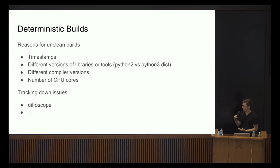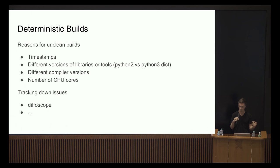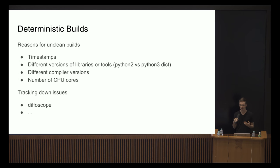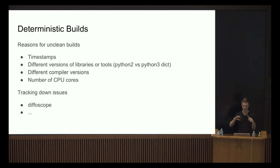Different compiler versions will result in non-deterministic builds — they may embed the compiler version somewhere in the executable, or they optimize code differently, yielding differently-sized or differently-performing binaries. Another fun one is the number of CPU cores used to compile: if there are different modules and one finishes earlier, it gets written to disk earlier, and in some way they end up differently sorted, yielding a different executable.